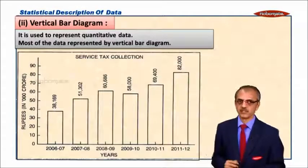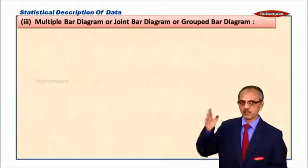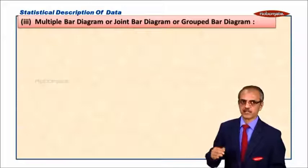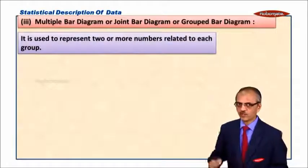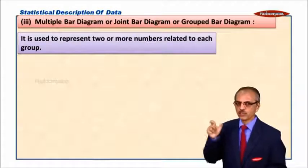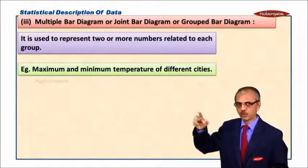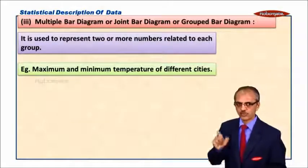This is an example of a vertical bar diagram. The next one is multiple bar diagram or joint bar diagram or group bar diagram. It is used to represent two or more numbers related to each group. Let us take a simple example.